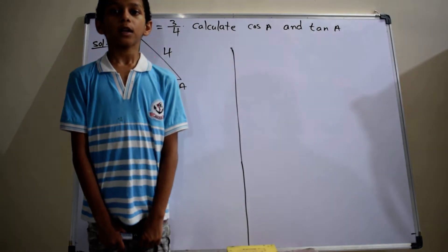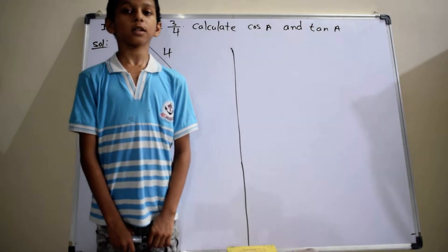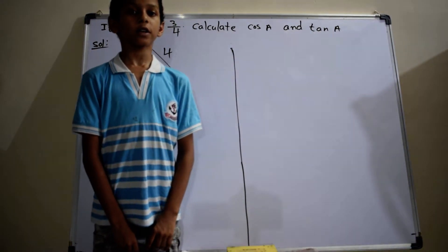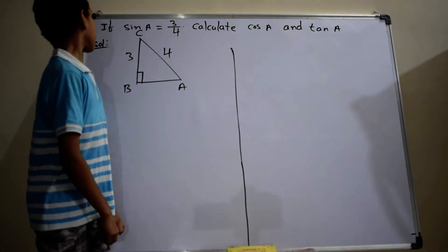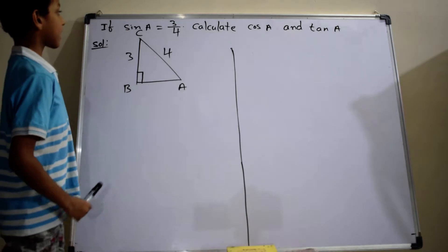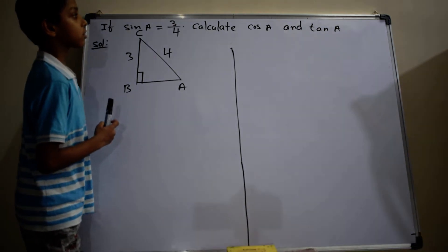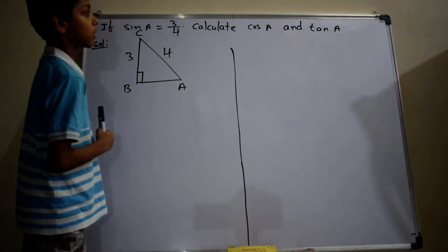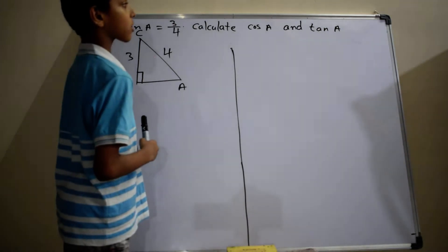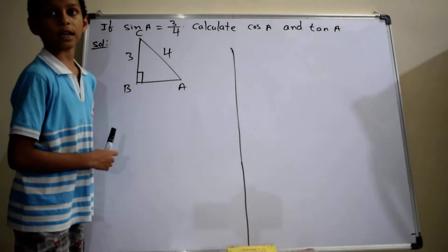Hi, I am Tsai Prabhakar. Let's discuss the solution of the given problem. If sin A equals 3 by 4, calculate cos A and tan A.